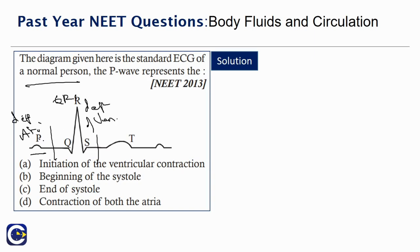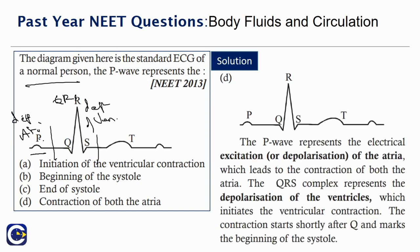Looking at the options, the P wave represents the contraction of both atria — it's the depolarization or contraction. The P wave represents the electrical excitation or depolarization of the atria, which leads to contraction of both atria. The QRS complex represents the depolarization of the ventricles, which initiates ventricular contraction and marks the beginning of systole. So the answer is: contraction of both the atria.